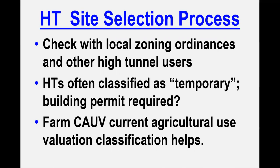A couple of general do's to consider. Check with your local zoning ordinances, because they may influence the siting of your tunnel. High tunnels are often classified as temporary, but you may still need a building permit to install one. Having a CAUV agricultural use classification can certainly help, but it is not necessarily required. You'll want to check with local authorities on any rules, regulations, or policies they have on installation and site selection.